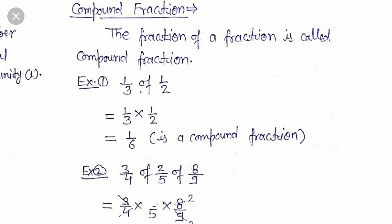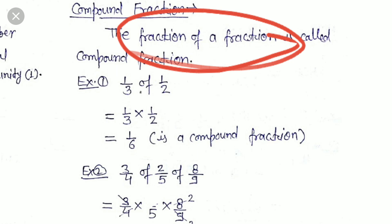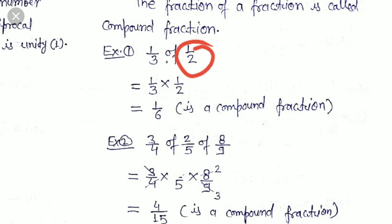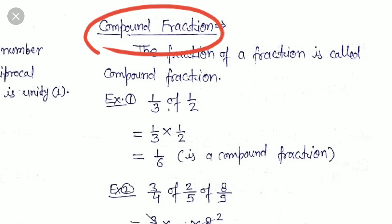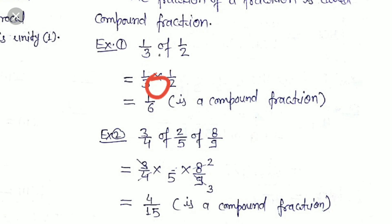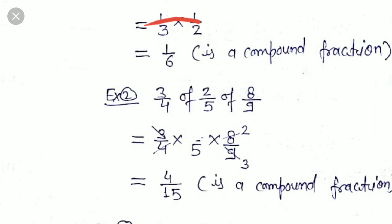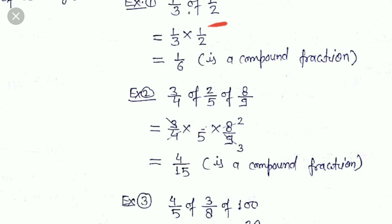The next topic is compound fractions. A fraction of a fraction is called a compound fraction. When a fractional part of a fraction is asked, the result is a compound fraction. The word 'of' means multiplication. For example, 1/3 of 1/2 means 1/3 × 1/2 = 1/6. So the compound fraction of 1/3 of 1/2 is 1/6.